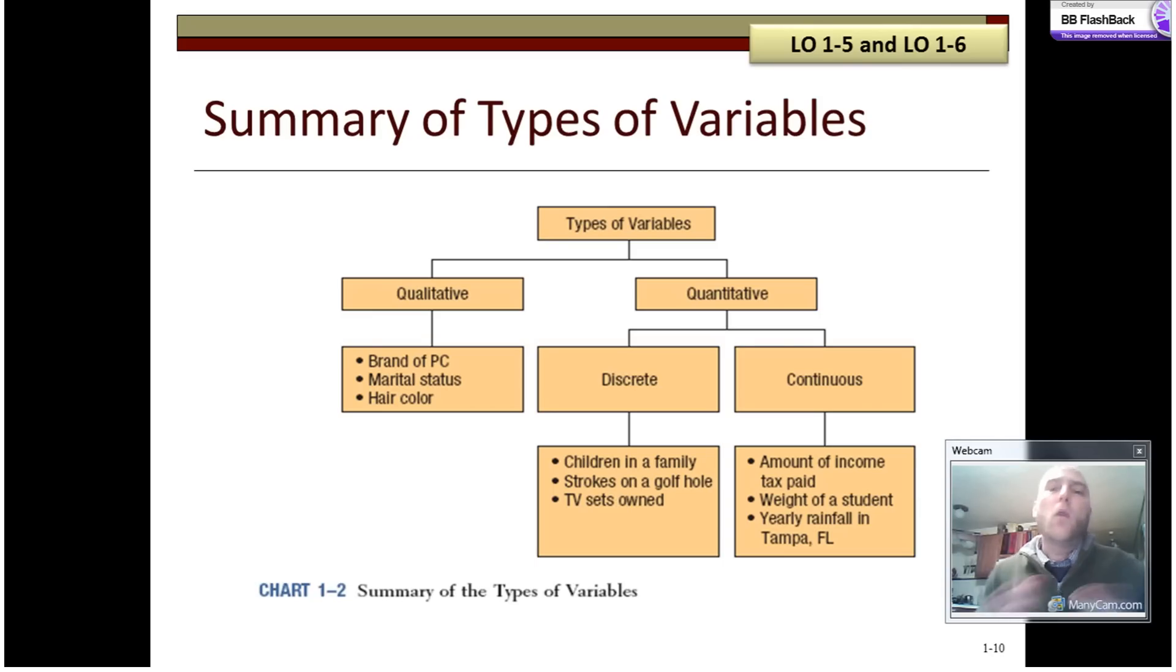In summary, qualitative and quantitative variables break out like this. Qualitative would be things like brand, marital status, hair color, the types of things that you might be able to actually answer from, let's say, a multiple choice. Is your PC a Gateway? Is it a Dell? Are you living in 1998? Sorry. Is your PC a Dell? Is it a Gateway? Is it a Toshiba? Is it a Sony? You could select one of these. Are you married? Are you single? Are you divorced? Are you blonde headed, brown headed, black headed, red headed, bald headed? If you could select it multiple choice, we're probably talking about a qualitative variable.